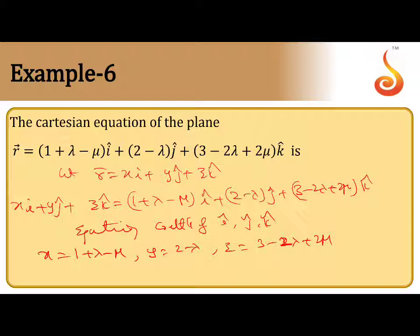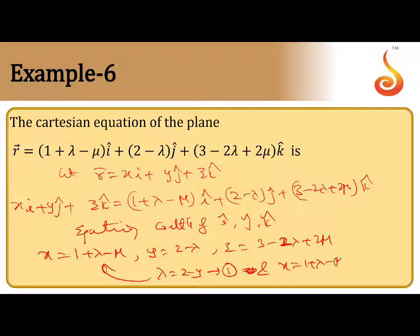From the j coefficient equation, λ = 2 - y. Substituting this into the x equation: x = 1 + λ - μ, so μ = 1 + λ - x. This gives us λ and μ in terms of x and y.